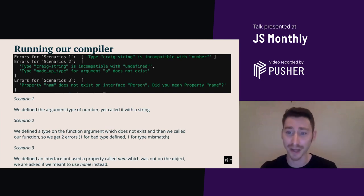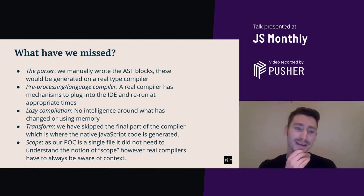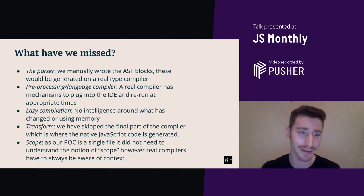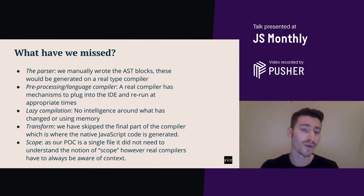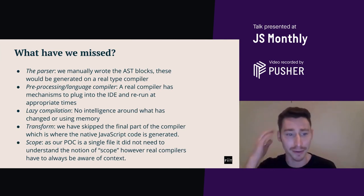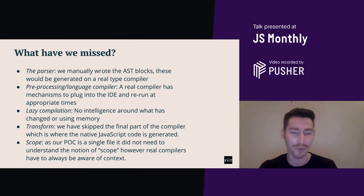It's a basic type checker in less than 100 lines of code. So what have we missed? There are many additional parts to a type compiler which we've omitted. Starting with the most basic — the parser: within a real compiler, AST blocks would have to be generated, not manually written. Then there's preprocessing and the language server — a real compiler has this mechanism to plug into an IDE and rerun at appropriate times. There's lazy compilation — we've got no intelligence around what's being changed or storing any of the AST blocks in memory. The transform step — we've completely skipped the final part of the compiler where it would be converted back into JavaScript code readable by the JavaScript runtime. And also scope — rural compilers have to be really aware of what has access to what.